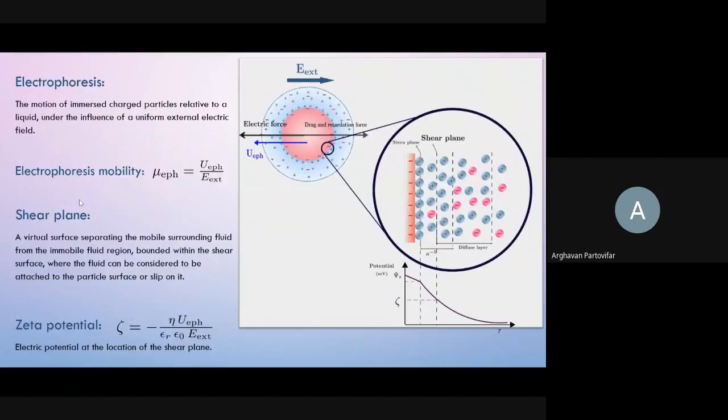When a charged particle immerses in an electrolyte solution and is subject to an external electric field, the particle moves due to the imposed electric field and relative motion between the particle and electrolyte is developed. This phenomenon is called electrophoresis. Electrophoretic mobility turns to electrophoresis velocity divided by external electric field magnitude.